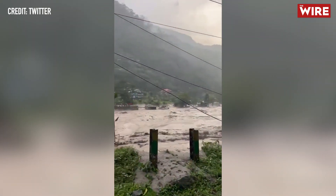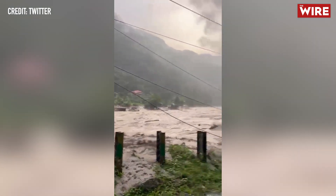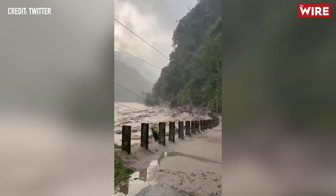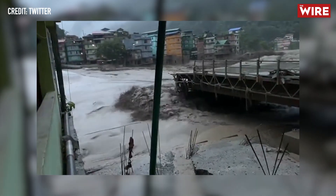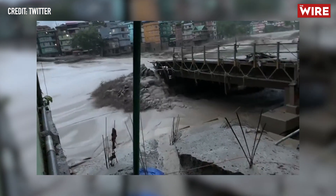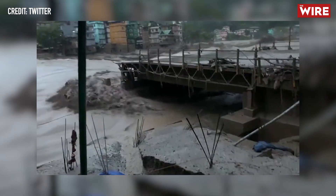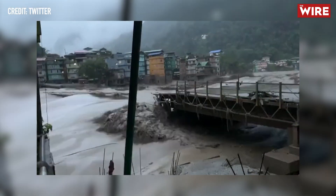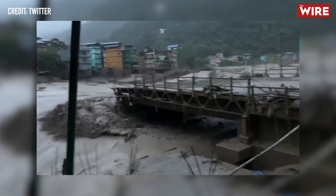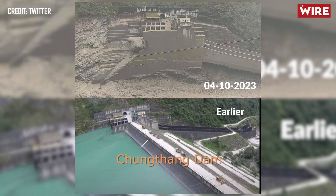On the intervening night between the 3rd and 4th of October, heavy rains caused the swelling of the South Lonak Lake, which subsequently led to flash floods in Sikkim and some parts of Bengal. The surge of flood water flowing into the Tista River Basin was so intense that it washed away several bridges and roads and rammed the Tista Stage 3 Dam in Chungthang, causing part of it to give way.